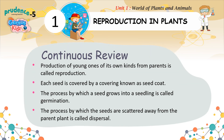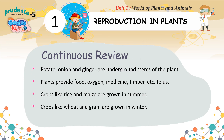Continuous Review: Production of young ones of its own kind from parents is called reproduction. Each seed is covered by a covering known as the seed coat. The process by which a seed grows into a seedling is called germination. The process by which seeds are scattered away from the parent plant is called dispersal. Potato, onion, and ginger are underground stems of the plant. Plants provide food, oxygen, medicine, and timber. Crops like rice are grown in summer, while crops like wheat and gram are grown in winter.